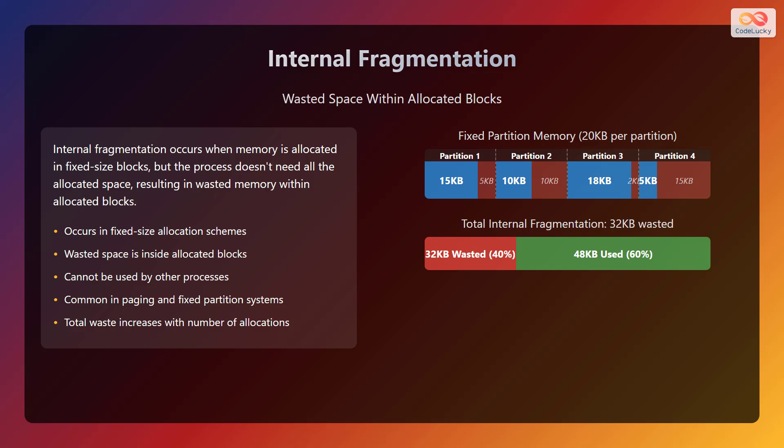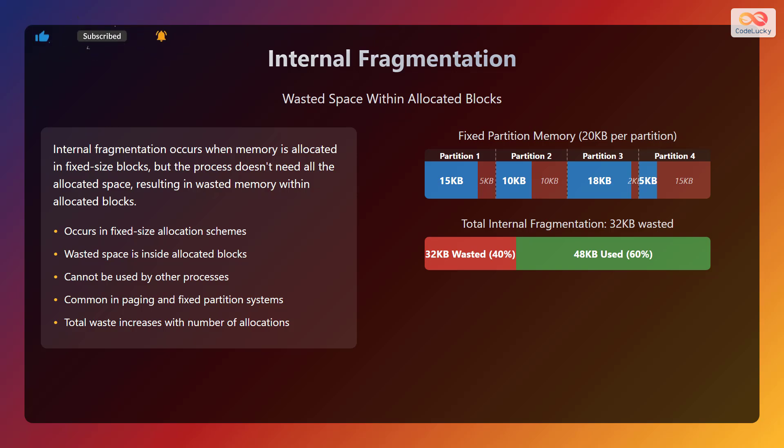Let us understand it with the help of an illustration. The first one shows a fixed partition memory of 20 kilobytes per partition. Partition 1 has 15 kilobytes used and 5 kilobytes wasted. Partition 2 has 10 kilobytes used and 10 kilobytes wasted. Partition 3 has 18 kilobytes used and 2 kilobytes wasted. Partition 4 has 5 kilobytes used and 15 kilobytes wasted. Hence, the total internal fragmentation is 32 kilobytes wasted, which is 40%, and 48 kilobytes used, which is 60%.